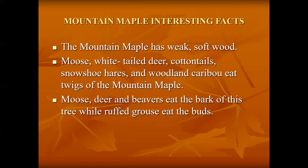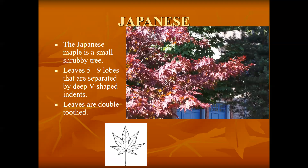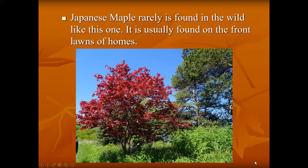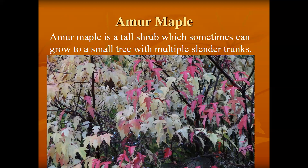Mountain maple interesting facts. Japanese maple is normally not on Tree Bee, but it's mentioned because it's so commonly found on lawns — it has a number of different lobes and very sharp indentations. It looks very pretty in the fall and is therefore a popular ornamental tree. Amber maple can grow wild.